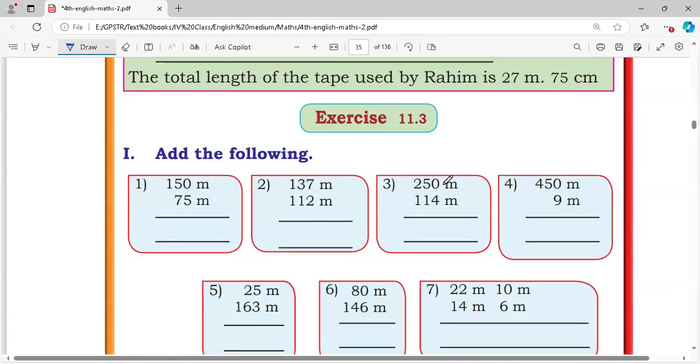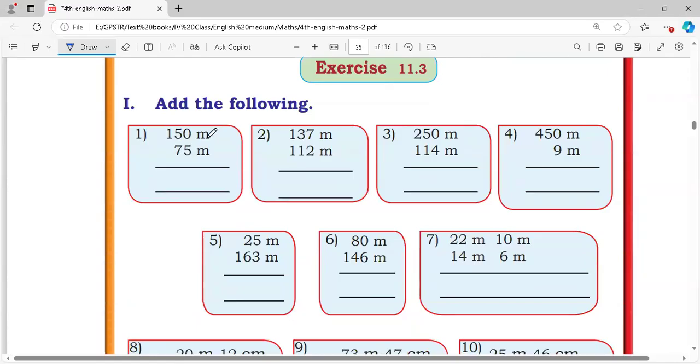Exercise 11.3, add the following. First one, 5 plus 0, 0 plus 5 is 5. 5 plus 7 is 12, carry 1. 1 plus 1 is 2, equals 225 meter. Second: 7 plus 2 is 9, 3 plus 1 is 4, 1 plus 1 is 2, equals 249 meter. Third: 0 plus 4 is 4, 5 plus 1 is 6, 2 plus 1 is 3, equals 364 meter.